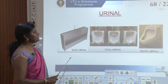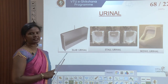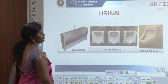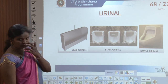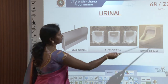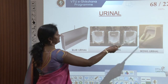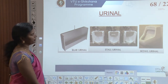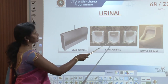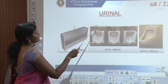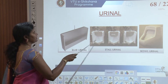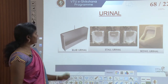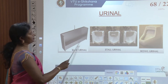The types of urinal are ceramic slab, stall type, and bowl type. The slab type is steeper than the stall type but does not provide the same degree of privacy. Ceramic bowl type urinals have less soiling area than the slab and stall urinals. You can see the different types: slab urinal, stall urinal, and bowl urinal. The stall urinals are similar to each other, and the slab urinal has one wide opening.